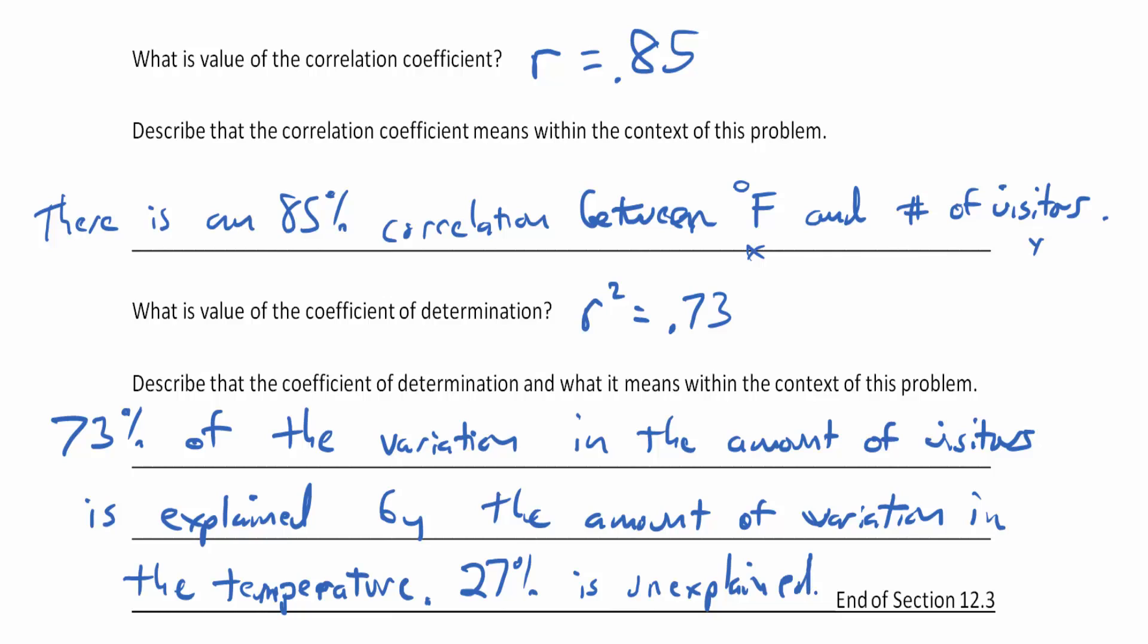Maybe that's explained by if it was raining or not, or maybe the things that were at the fair, or the economy, or all sorts of different things, if there was a competing event. We don't know what these unexplained things are, but we do have to mention that there's a percentage that is unexplained, and the bigger the unexplained number is, the more we have to think about what could be causing some of that variation.